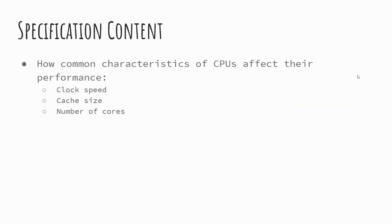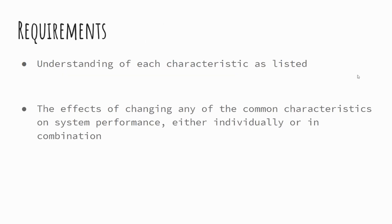The specification content for today is looking at the common characteristics of the CPU, with a particular focus on the clock speed, cache size, and the number of cores. These are sometimes referred to as the three C's — clock, cache, cores. I'll pause on the requirements for you to have a quick read through.